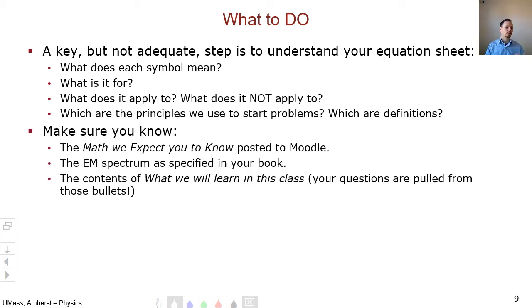Finally, make sure you know the math we expect you to know document posted to Moodle, which includes the SI prefixes from nano to giga, the surface area of a sphere, all that good stuff. Make sure you know the EM spectrum that's defined in your book. I think as scientifically educated people, you should know the order of the EM spectrum from radio to gamma. And also make sure you look at that what will we learn in this class document that's posted to Moodle. Your test questions are pulled from those bullets. So go make sure that you can do those things.